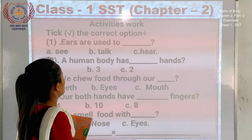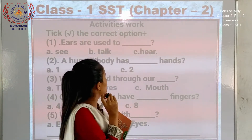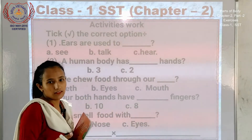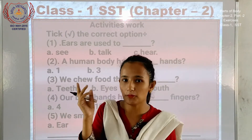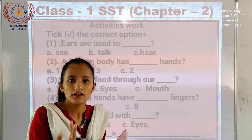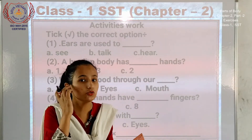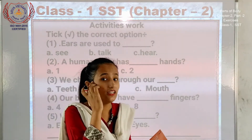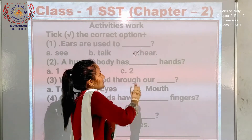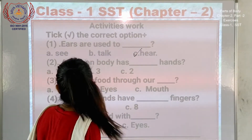Board mein dekhiye. Take the correct option. 'Ears are used to' — see, talk, hear. Kaan jo hai, ears are used to — kaan hum loko ko kya kaam karta hai? Sunne mein. So aap loko kis par theek lagaayenge — 'hear'. Theek hai, next dekhiye.